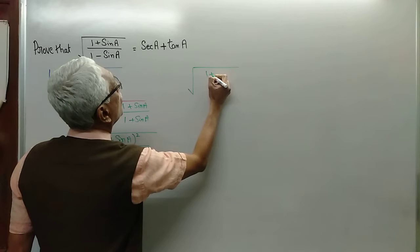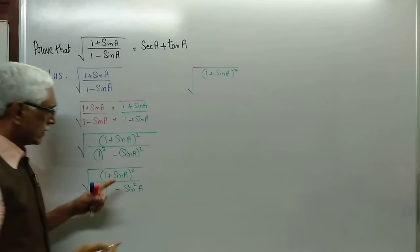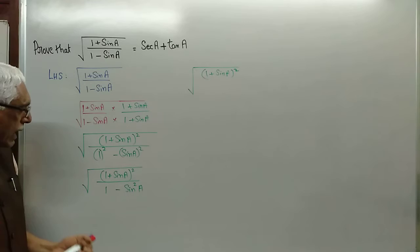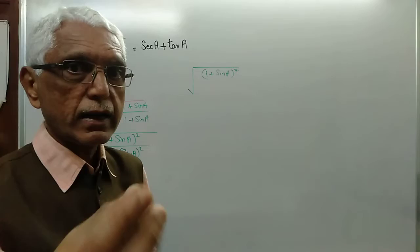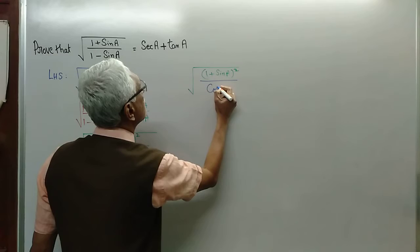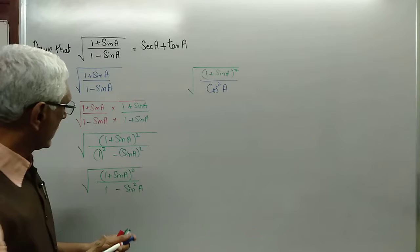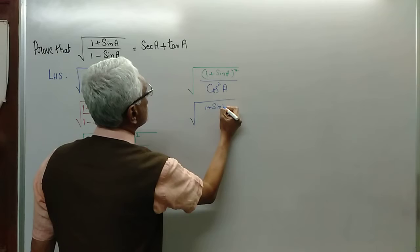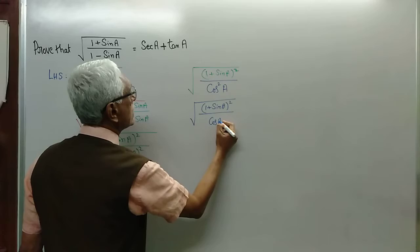What happens next? We have (1 plus sin a) whole square in the numerator, and 1 minus sin square a in the denominator. You know the identity: sin square a plus cos square a equals 1, so 1 minus sin square a is nothing but cos square a. So we have (1 plus sin a) whole square divided by cos square a.